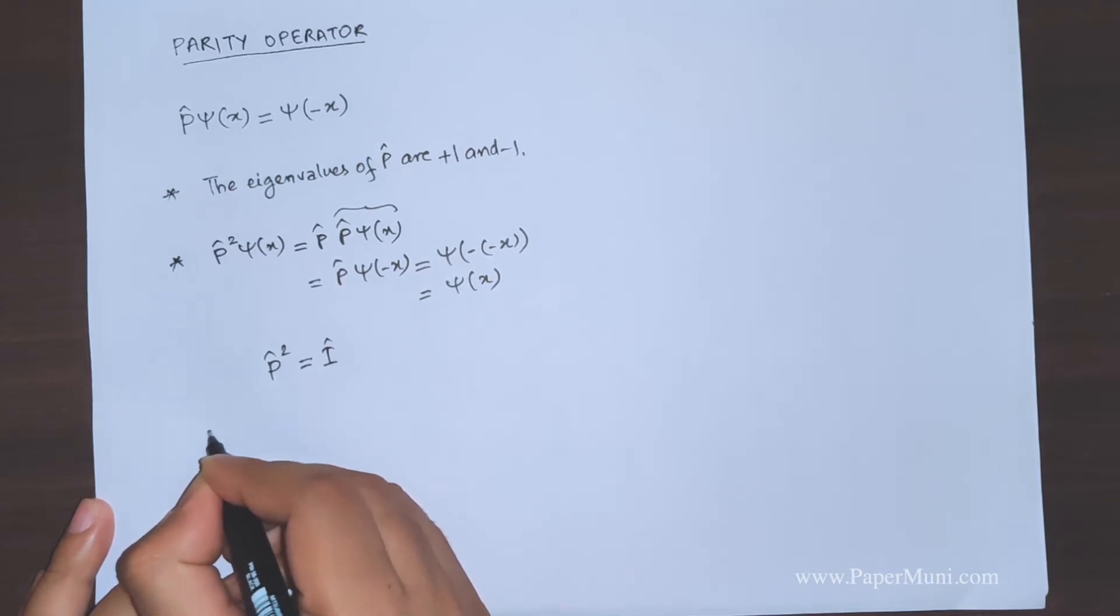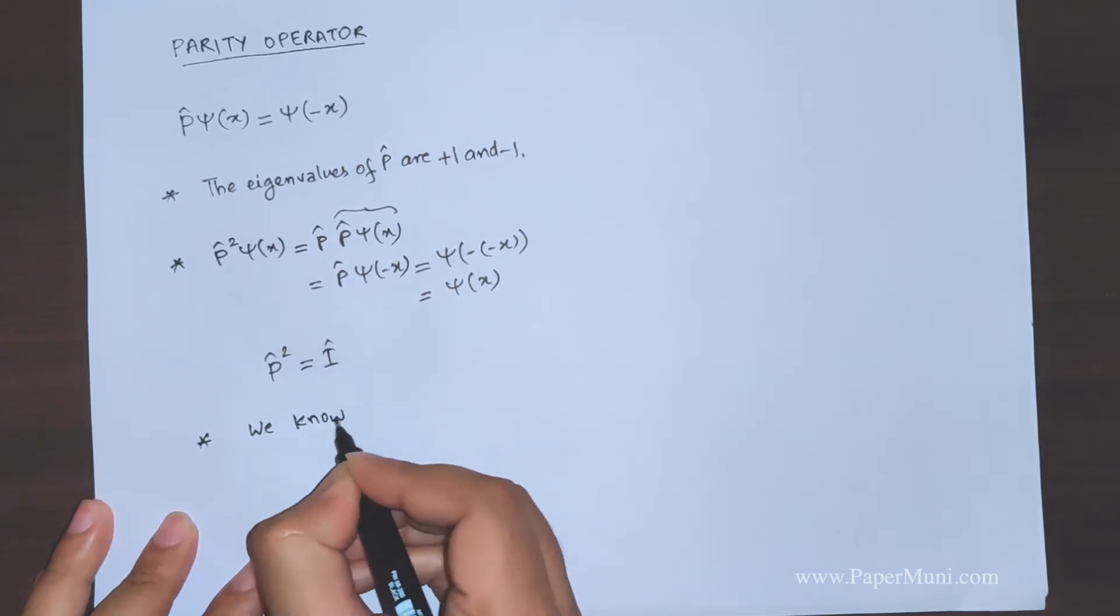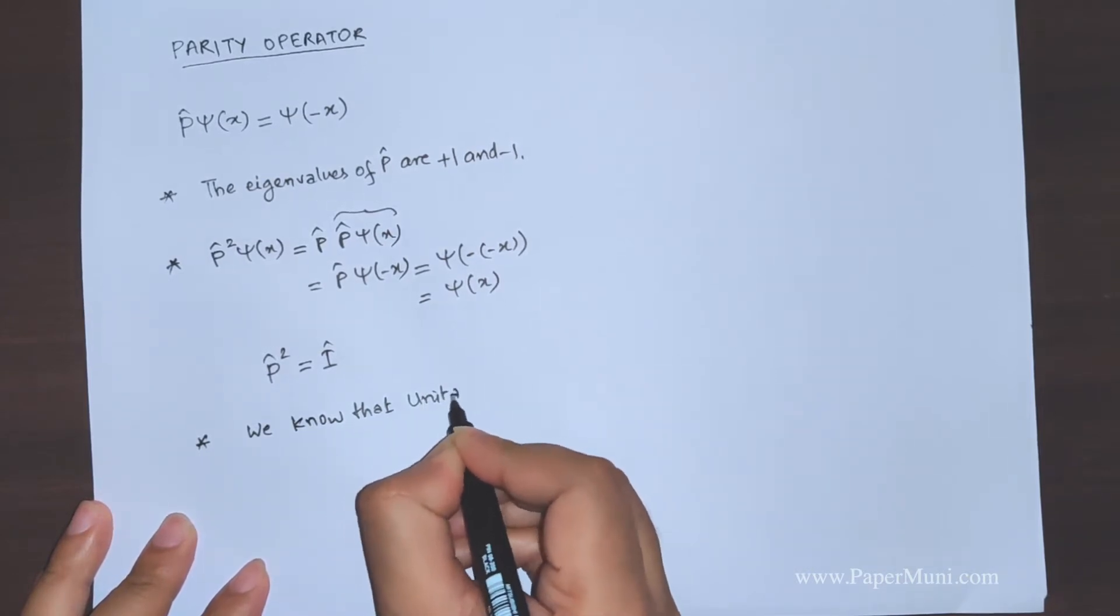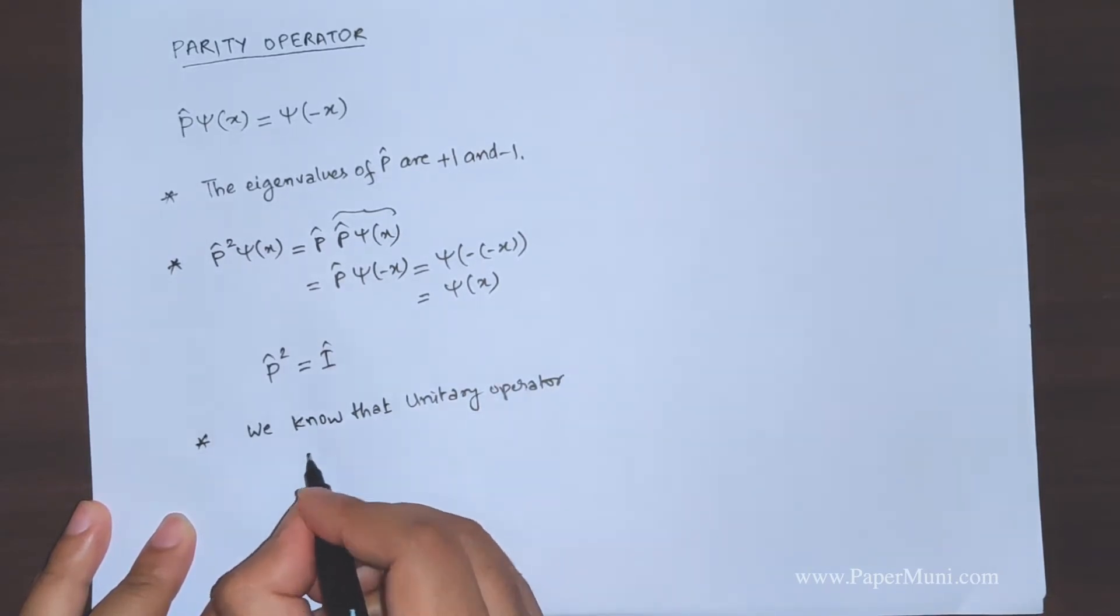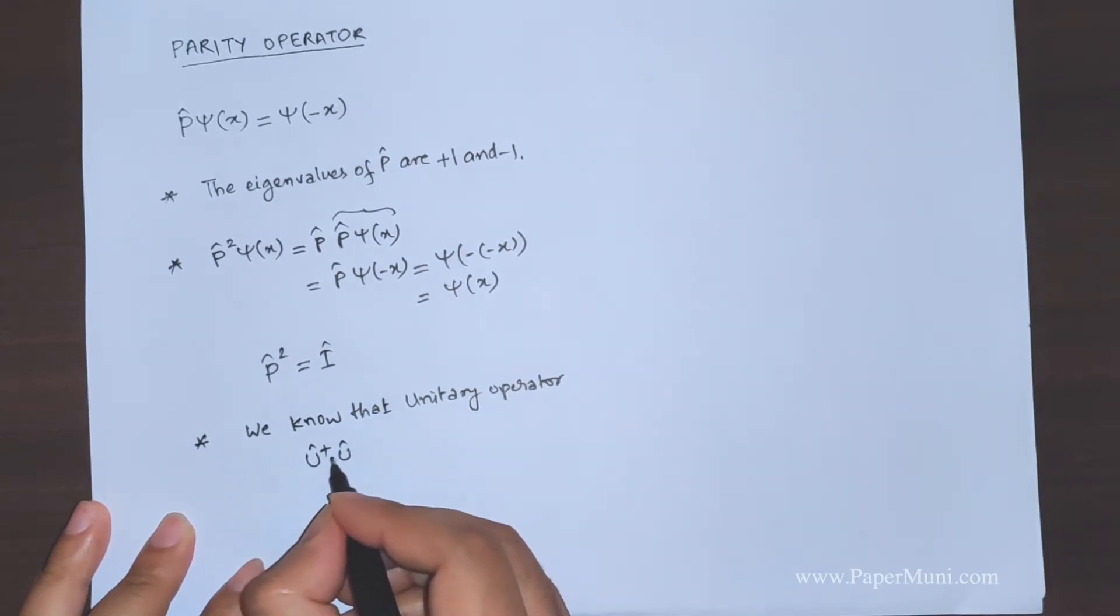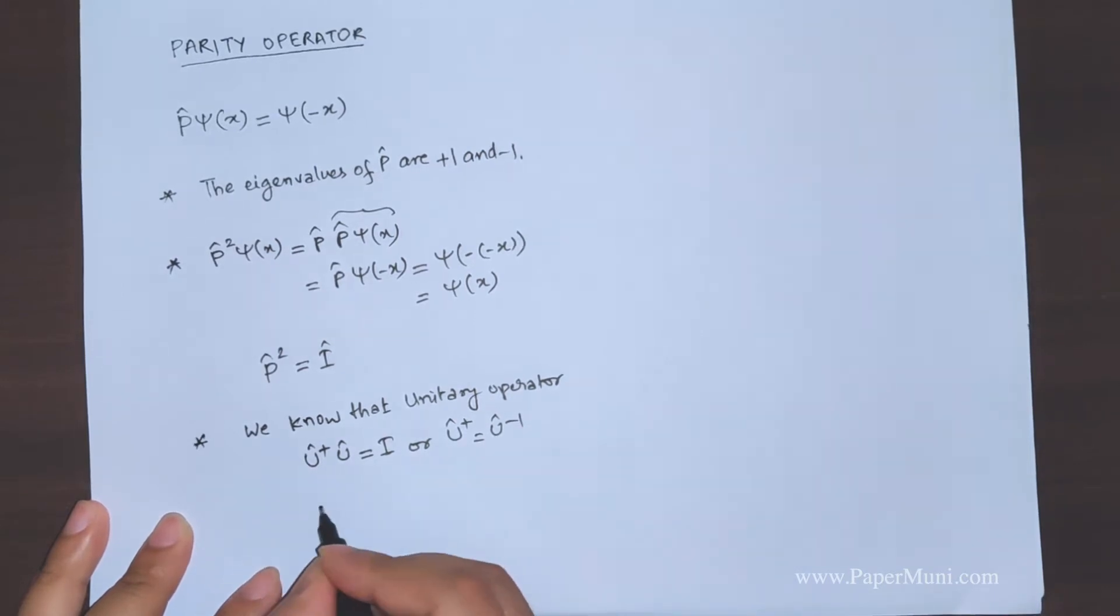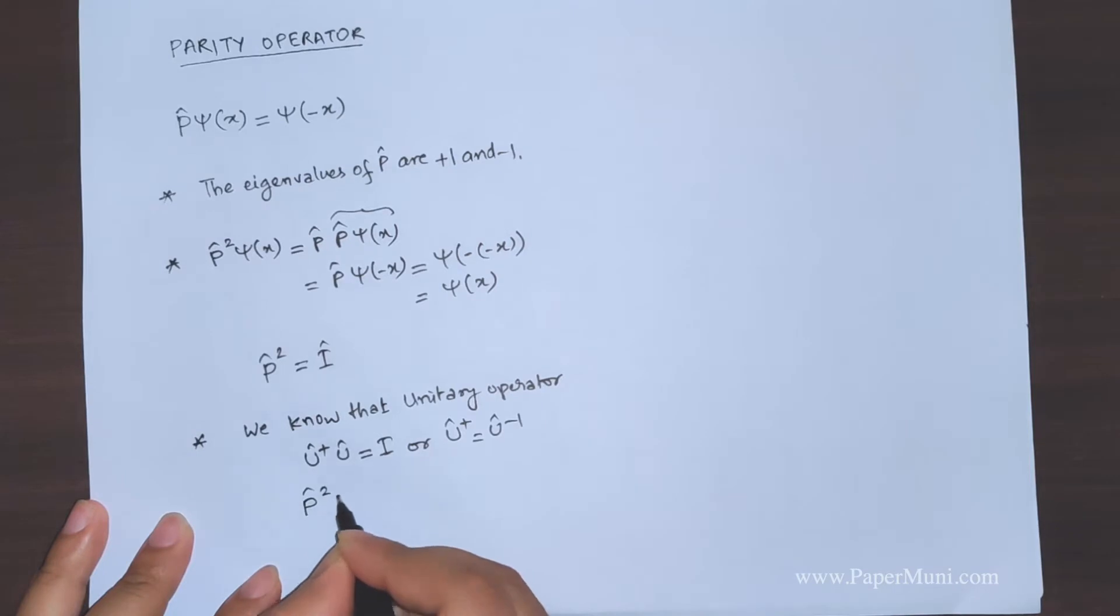Now one can also see that parity operator is a unitary operator. So we know that unitary operator has this property that U dagger U, the dagger is the conjugate transpose, is equal to identity, or U dagger is equal to U inverse.